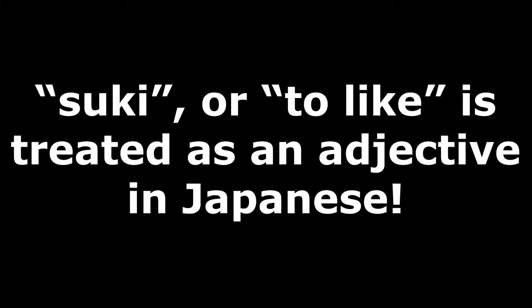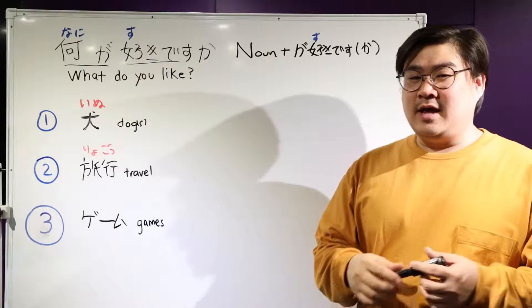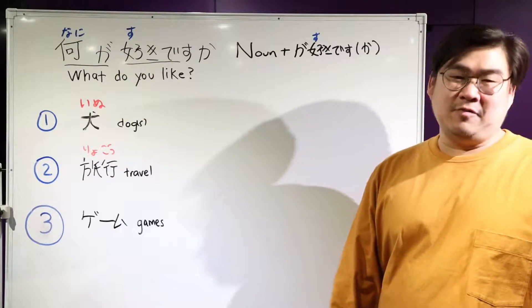But suki desu is actually an adjective, strictly speaking, in the Japanese language. It is not a verb as we might use 'like' in English. So let's see how it works.